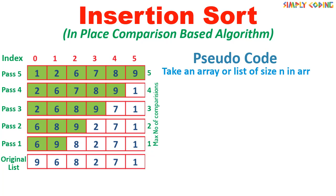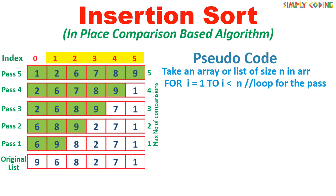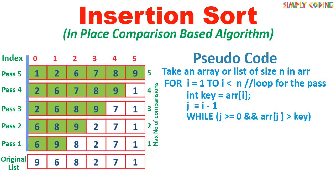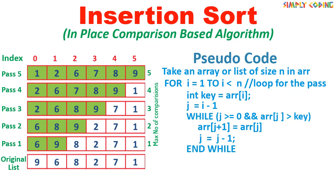Take an array or list of size n in variable ARR. We saw that if you have n elements, then you run a pass for all elements from index 1 to n. So this will be our first loop to run the pass for i from 1 to n. For each pass, you copy the first element of unsorted list in key. Then you start from the last member of sorted array which is position i-1. We parse through the sorted array in reverse till we reach the end of the sorted array at index 0 or till key is less than any sorted array element. If the element is larger, it is moved to the right. This loop continues till either condition is met. Once it comes out of the while loop, the key is copied to the next free position.